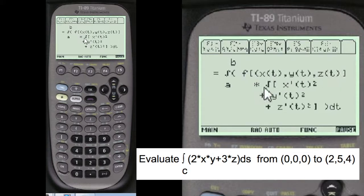Times the magnitude, which is X prime of T squared, Y prime of T squared, and Z prime of T squared. Write this all on your paper, of course.